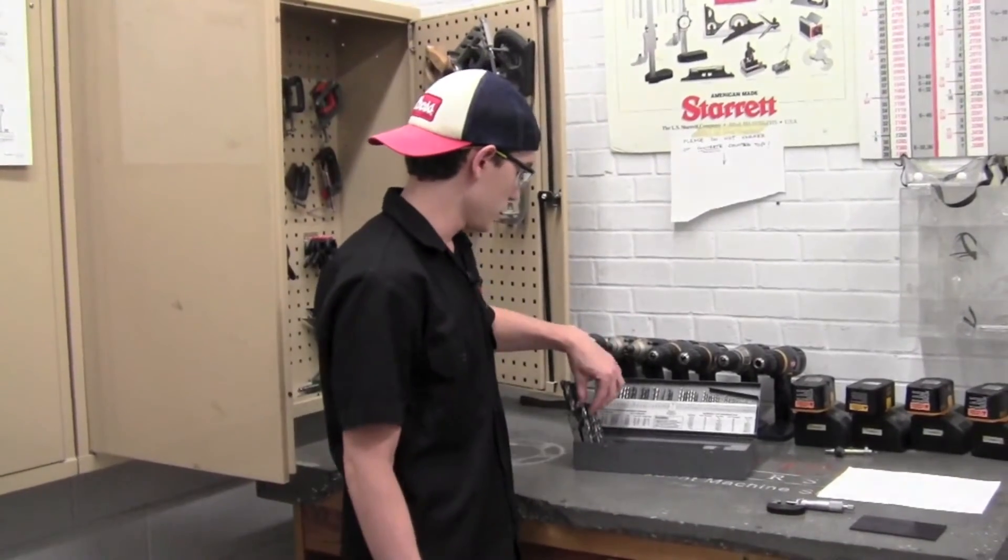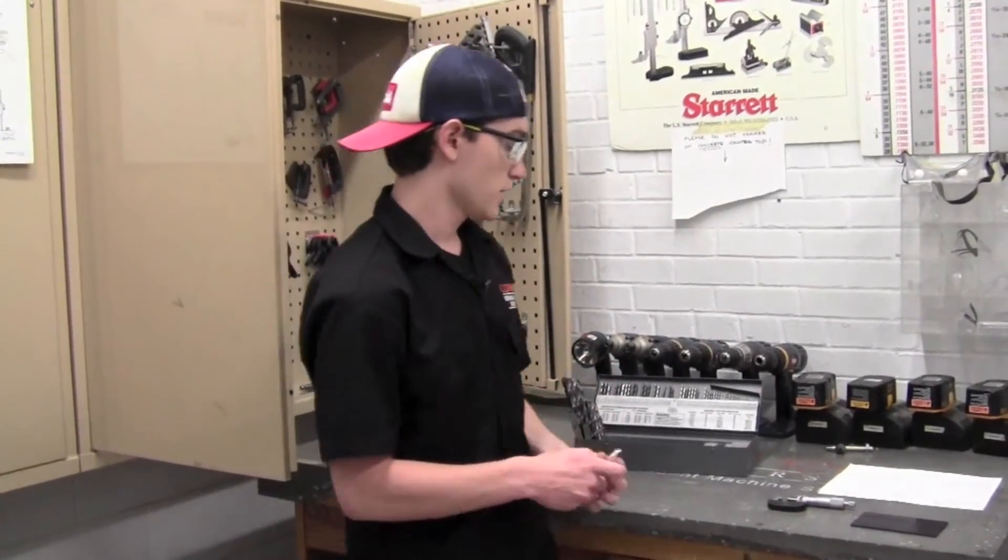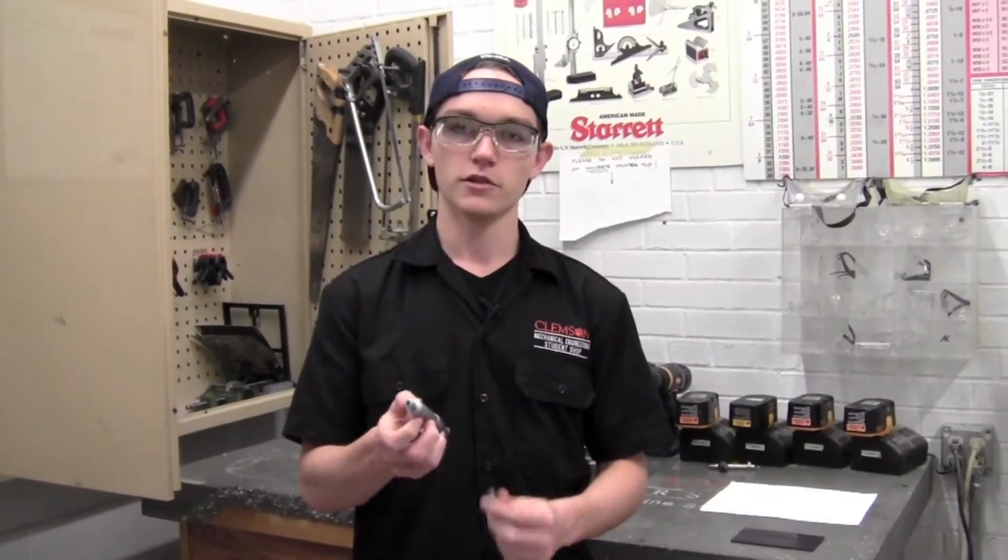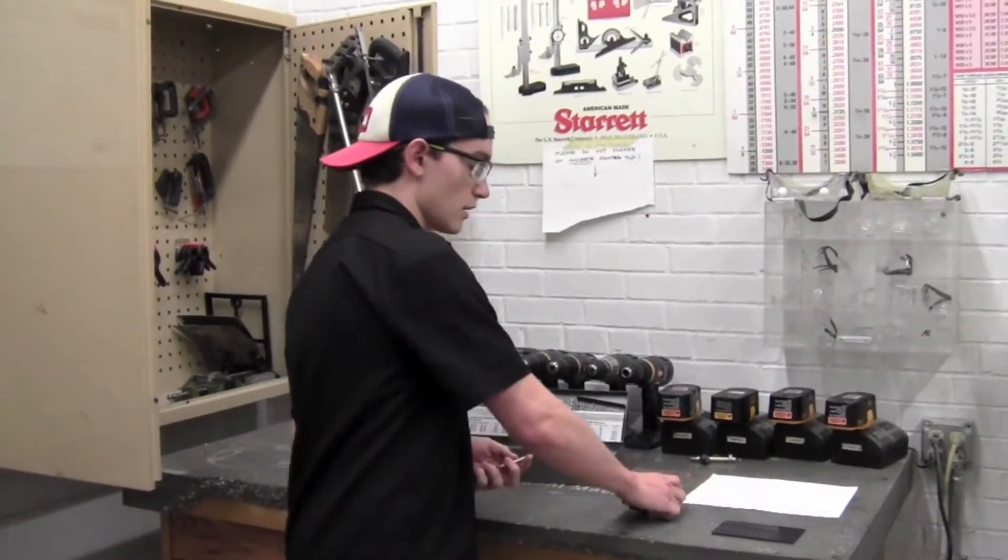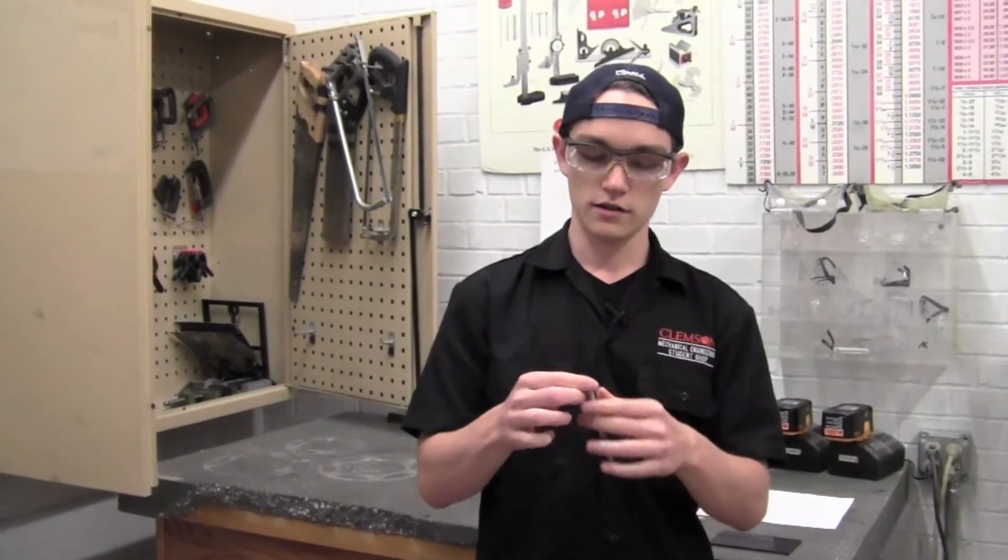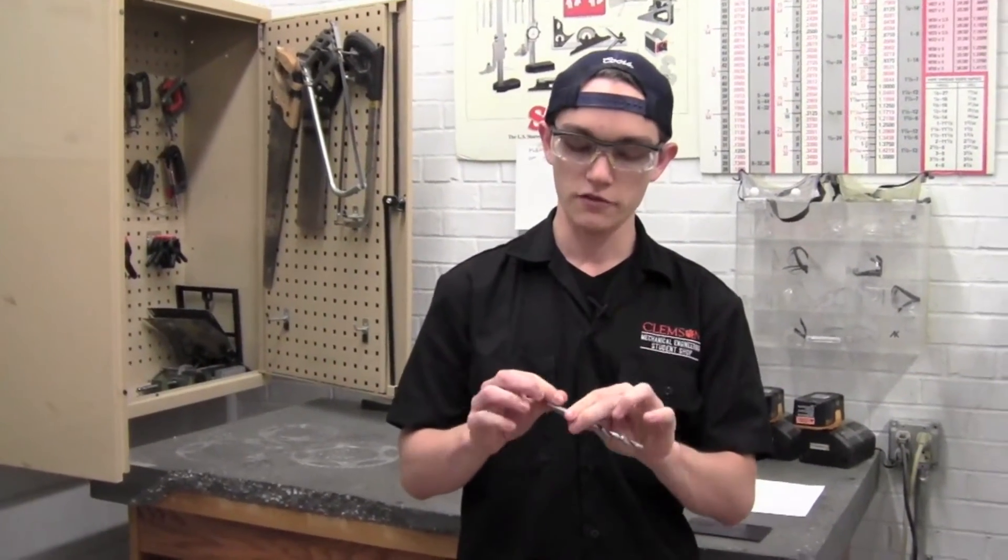So once you've determined the size of the drill bit that you're going to need, you'll probably want to verify that that is indeed the size. You can do this using a micrometer, also commonly referred to as a mic. For instruction on how to read and measure drill bits or anything really, using a micrometer, you can refer to the shop manual or you can just ask a supervisor for help. A lot of times, the size will be listed somewhere towards the base on the drill bit, but often that reading is illegible, so you'll want to verify it using a micrometer.